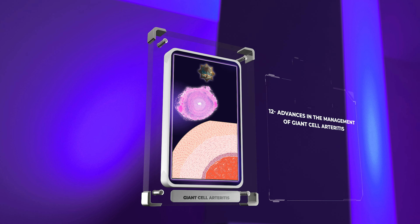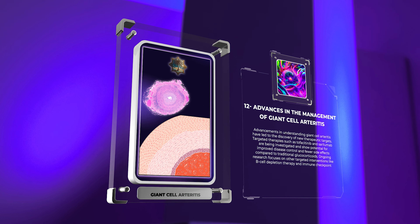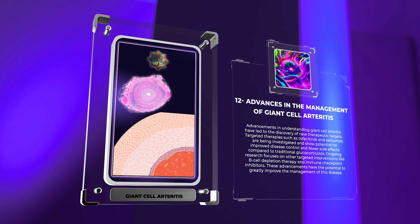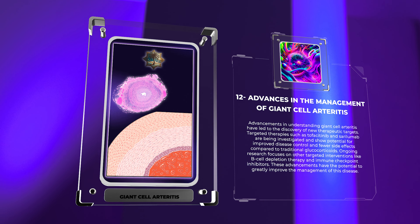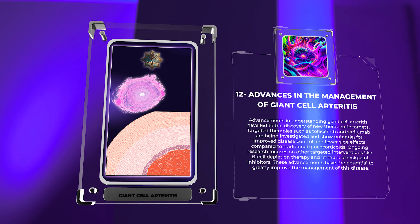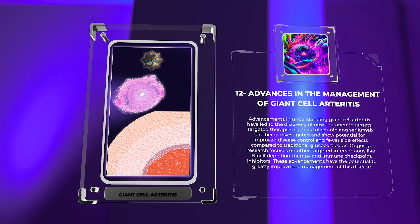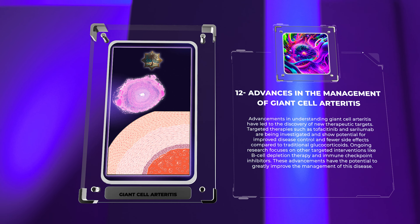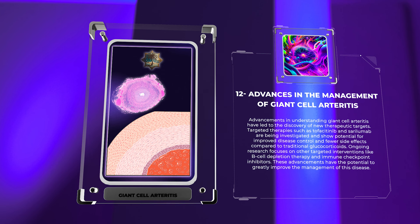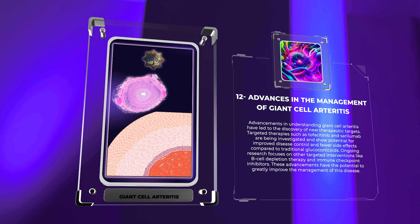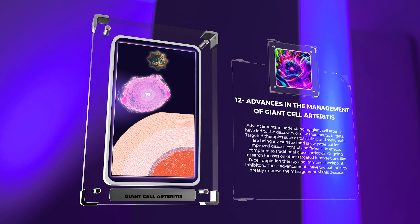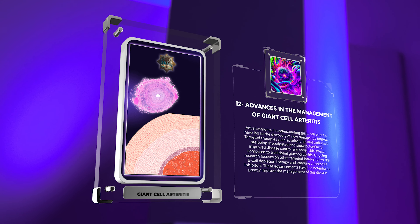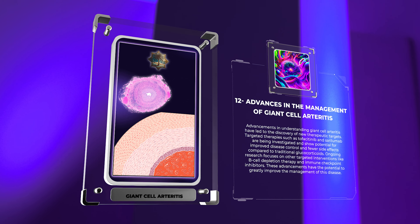Advancements in understanding giant cell arteritis have led to the discovery of new therapeutic targets. Targeted therapies such as tofacitinib and sarilumab are being investigated and show potential for improved disease control with fewer side effects compared to traditional glucocorticoids. Ongoing research focuses on other targeted interventions like B-cell depletion therapy and immune checkpoint inhibitors, with the potential to greatly improve disease management.